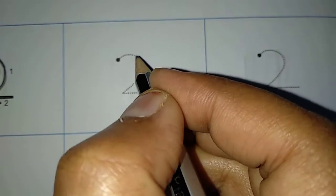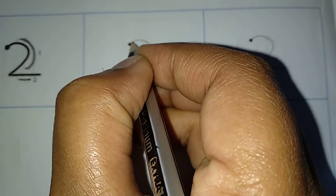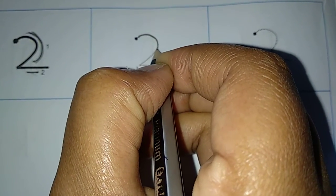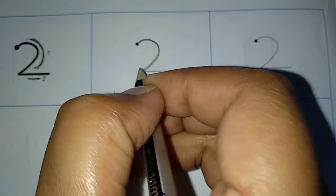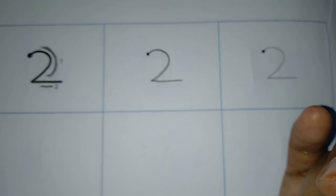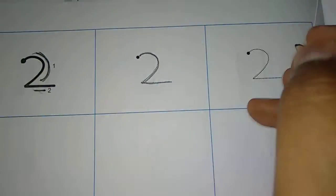So first how to write. We have to write. First, write curve. Write curve. And in the end of that curve, you have to draw 1 sleeping line. So how to write.